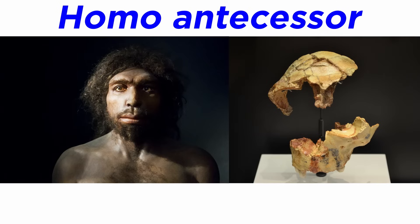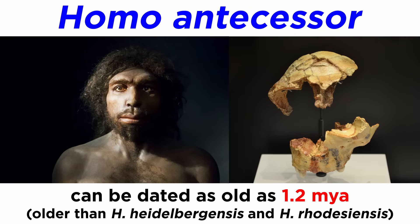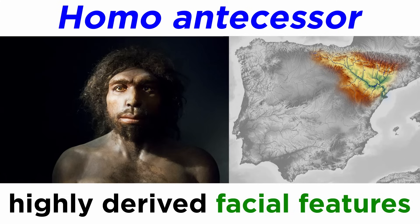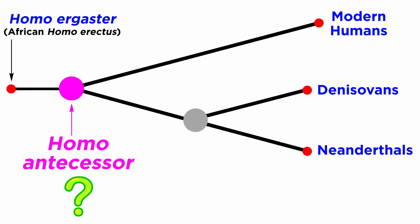The problem is further complicated by another hominin known as Homo antecessor. While most material from Homo heidelbergensis and Homo rhodesiensis are younger than 1 million years, Homo antecessor can be dated as old as 1.2 million years. It was found in Spain and originally shook things up due to the proposal that its face was remarkably derived, making it a good candidate for the last common ancestor of humans and Neanderthals, booting Homo heidelbergensis aside for the time being.